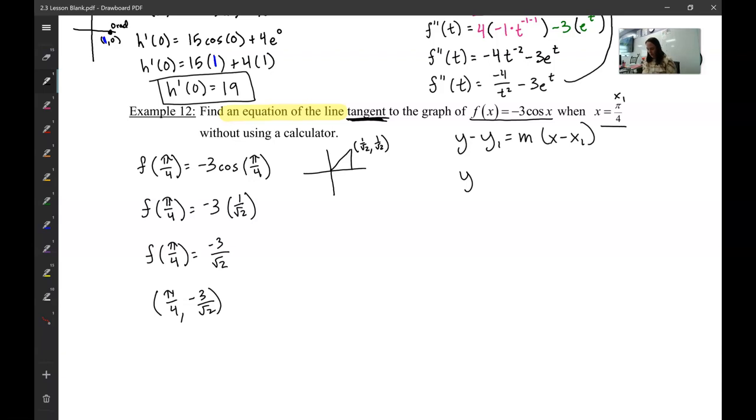So f of pi fourths is going to be negative 3 over root 2. So that means my x1 is pi fourths. My y1 is negative 3 over root 2. So I can already start to fill this in. Y minus y1. So minus a negative, it will be plus 3 over root 2. Equals m. I don't know my slope yet. X minus my x1. Pi fourths.